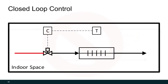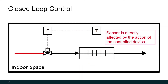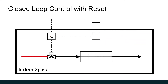The obvious improvement is closed loop control, where you move the temperature sensor back inside the space. The sensor is directly affected by the action of the controlled device — when the hot water valve opens and the coil heats the space, we can measure if it's actually heating or not. This is good because we get feedback on whether our control loop is working. However, let's say it's 65 or 70 degrees outside and the space is only a couple degrees below setpoint — maybe we don't want to run our heater. We can add an open loop to our closed loop system, and this is closed loop with reset.